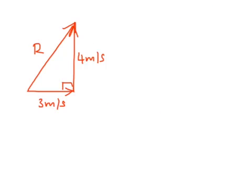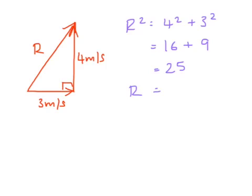So here I've redrawn the triangle and now we're going through the calculations. So the first thing I want to do is I want to find out the size of R. So I know that R squared is equal to 4 squared plus 3 squared, which is 16 plus 9, which equals 25. And that makes R the square root of 25, which would be 5 metres per second.